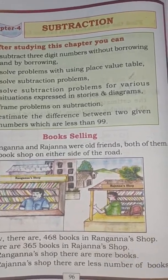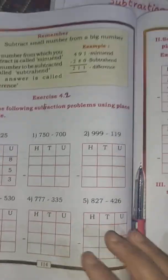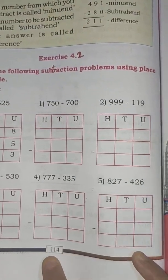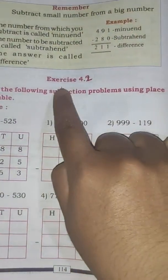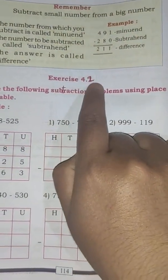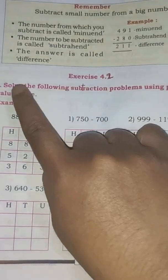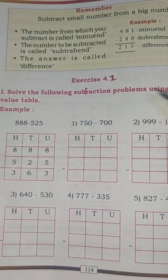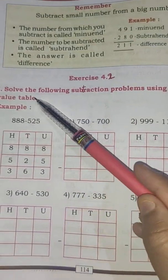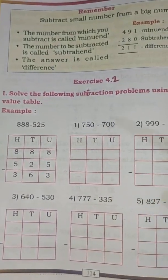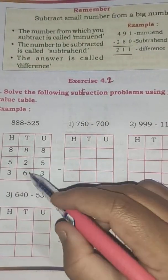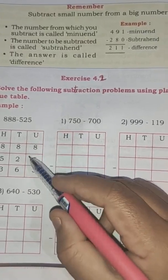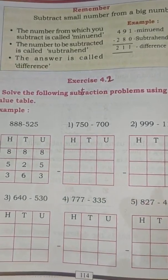Today in this class we are going to solve the exercise part which is on page number 114, Exercise 4.2. So: solve the following subtraction problems using the place value table. By using the place value table or place value chart, we have to subtract the given numbers.